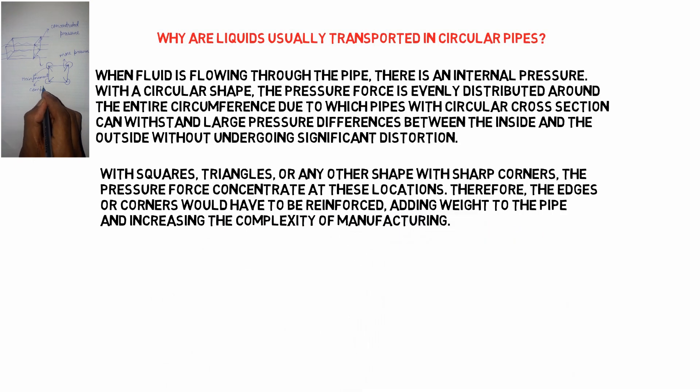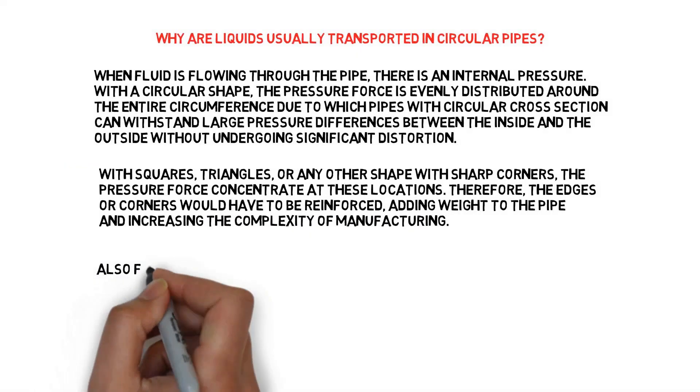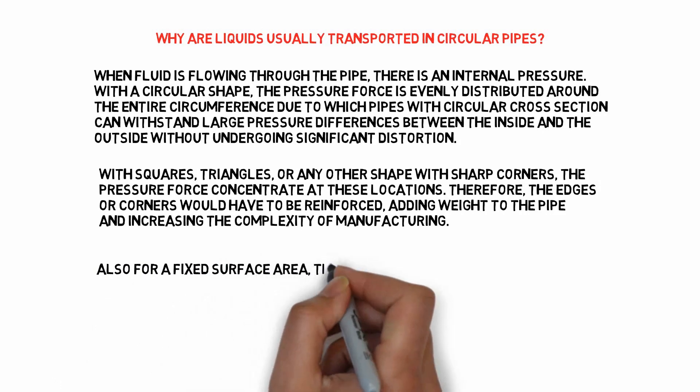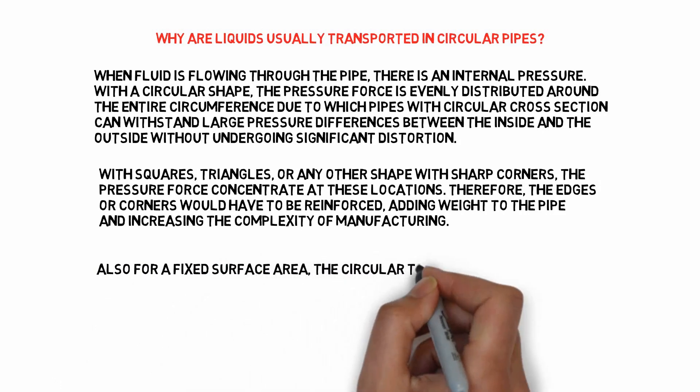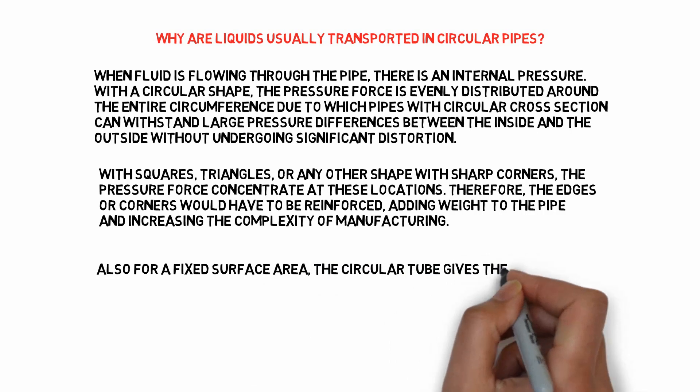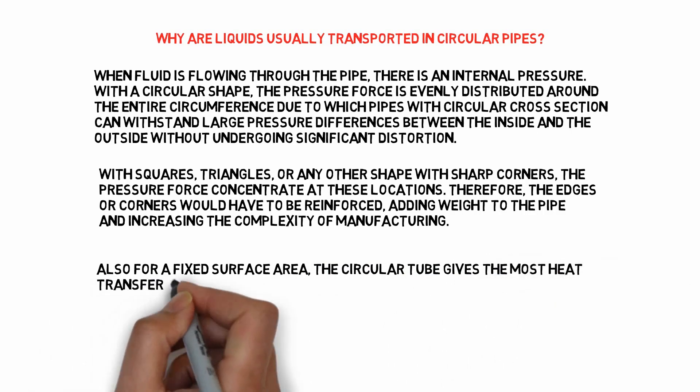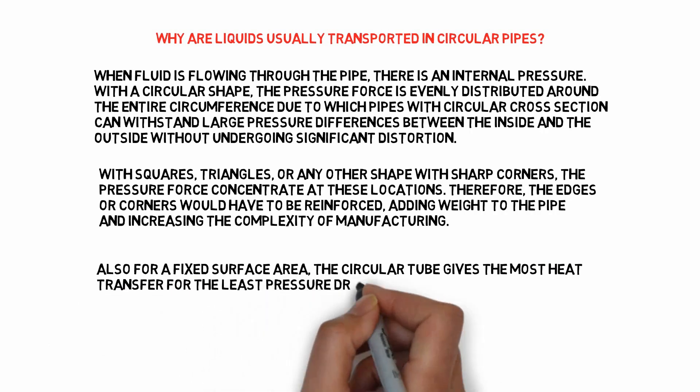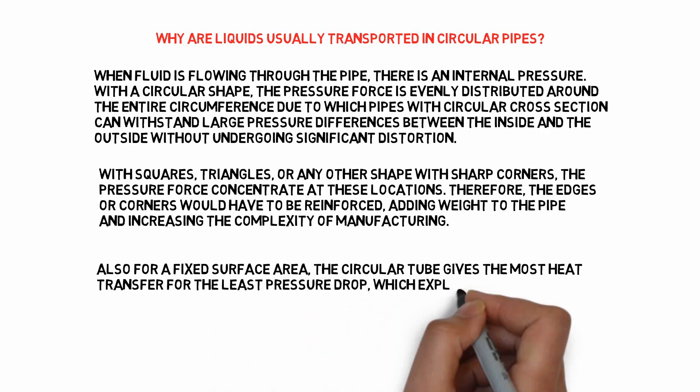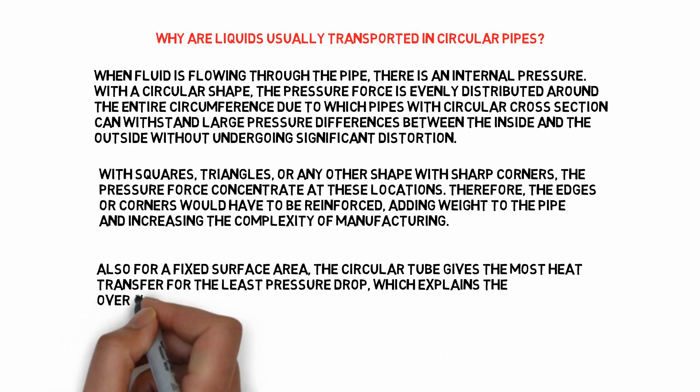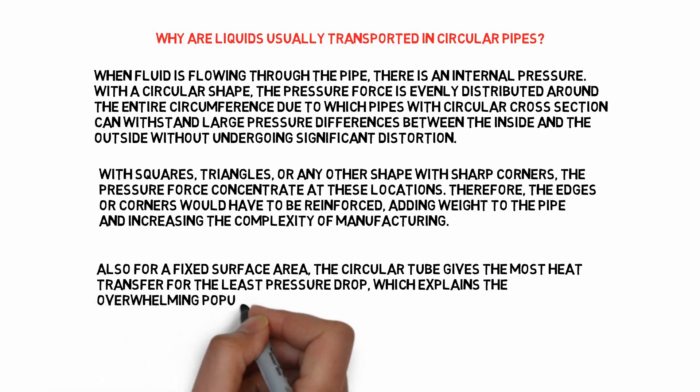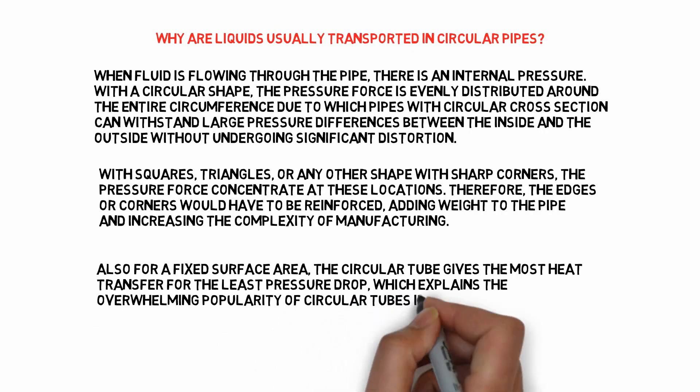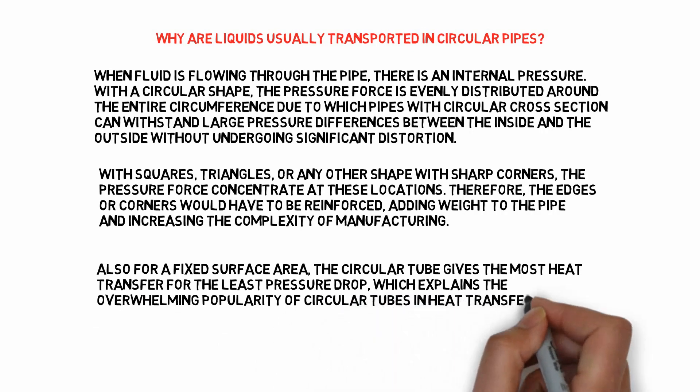Also, the other reason is for a fixed surface area - like we are having a sheet and we are making the cylindrical shape with that sheet - the circular tube gives the most heat transfer for the least pressure drop. The volume flow rate will be maximum, which explains the overwhelming popularity of circular tubes in heat transfer equipment.